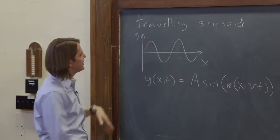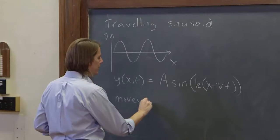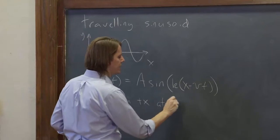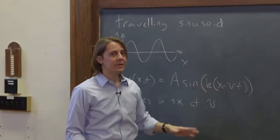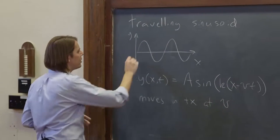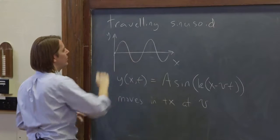If you were to watch this in time, you would find that it moves in the positive x direction at v. So when you have x minus vt, it moves in positive x. And sometimes that bothers people. You can think about it and see it pretty clearly if you just think about where is the sine zero.